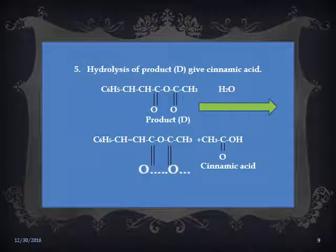This is step 5 of Perkin reaction. In this step, hydrolysis of product D gives Cinnamic Acid. Product D reacts with one molecule of water and is converted into Cinnamic Acid, which is the final product of Perkin reaction. We also get CH₃COOH (acetic acid) as a byproduct.